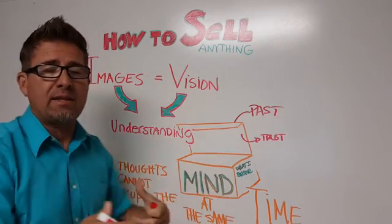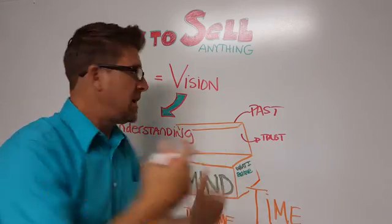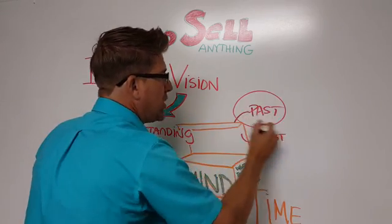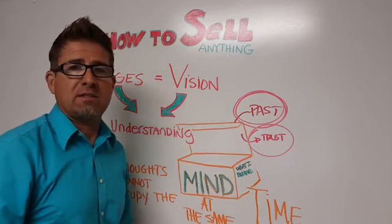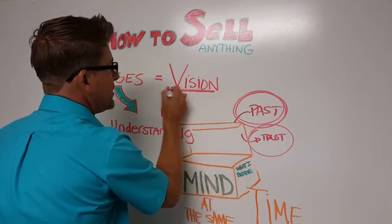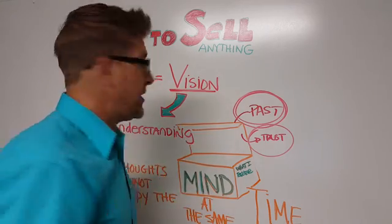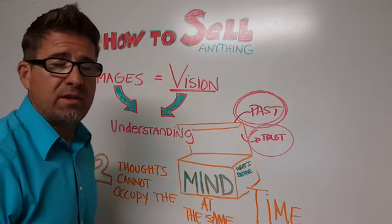Two thoughts cannot occupy at the same time. So one at a time, give them some pictures, let them create that storyboard themselves. You're going to start asking questions. And remember, they're going to go based on their past experiences. So you've got to develop trust. And the way you develop trust is to make sure that that vision that they're creating is the same vision based on those images that you've given them.